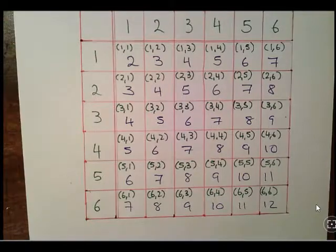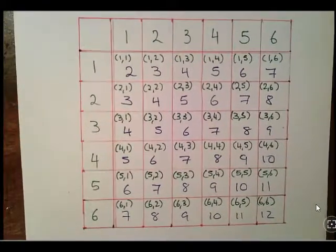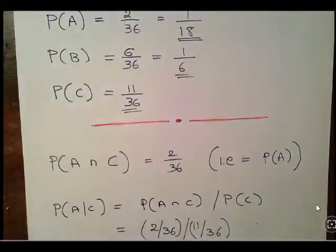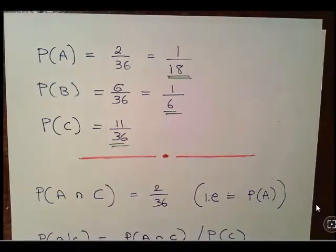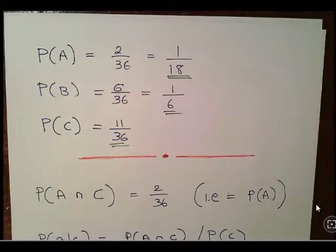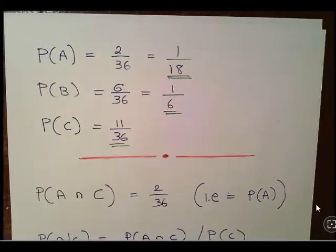To formally state all of those results: the probability of A is 2 out of 36, which is 1/18. The probability of B — where the dice sum to seven — is 6 out of 36, which is 1/6. And the probability of C is 11 out of 36.